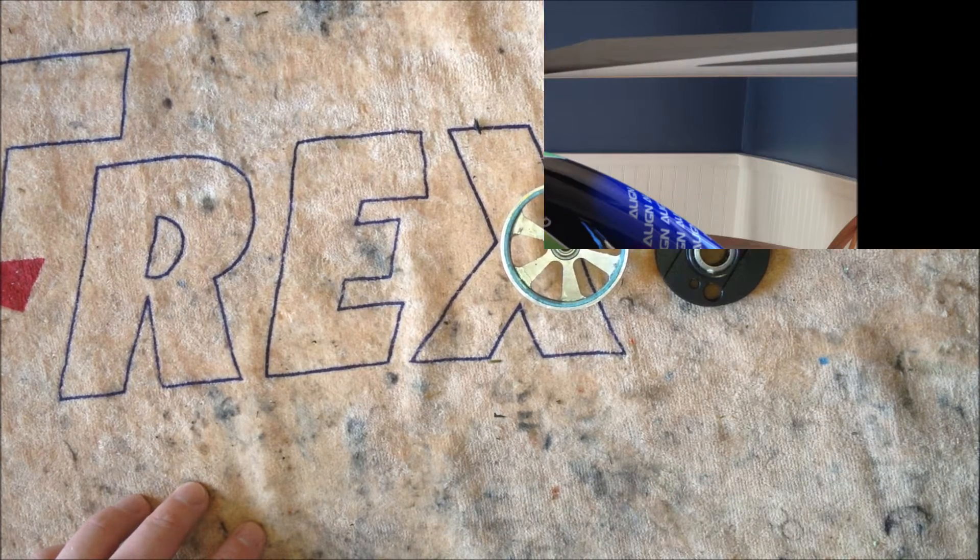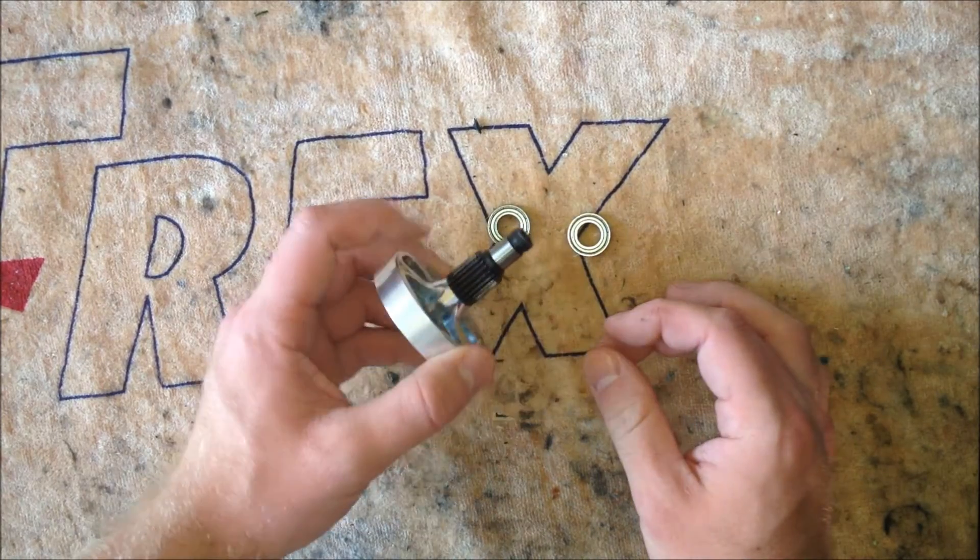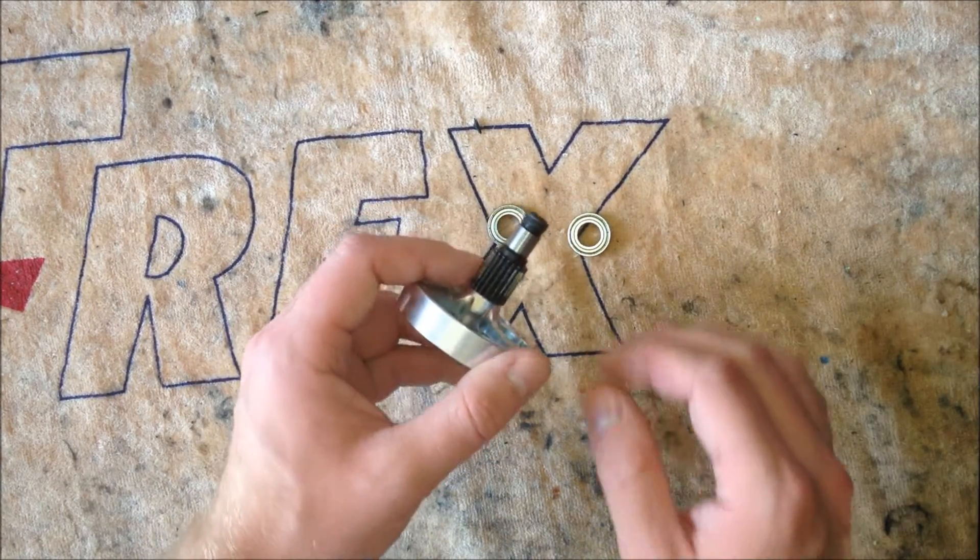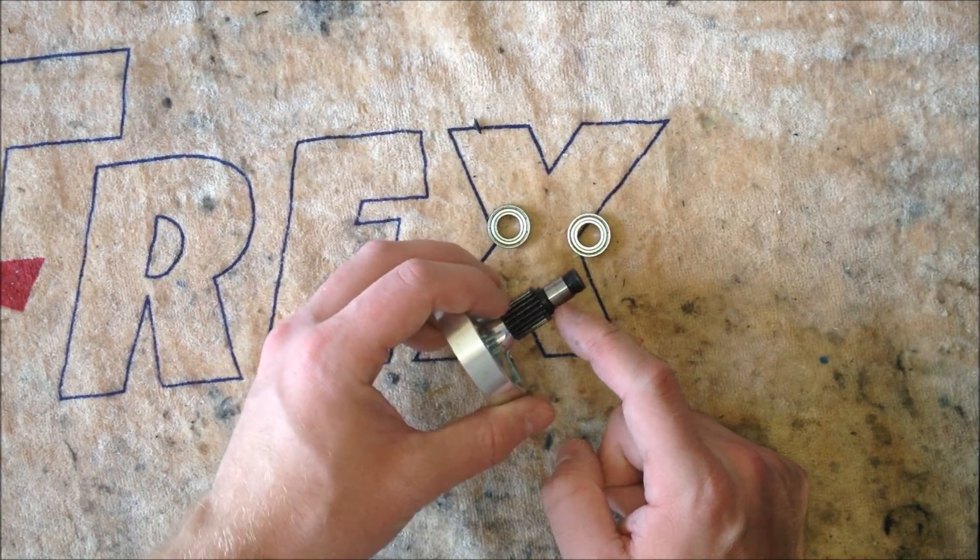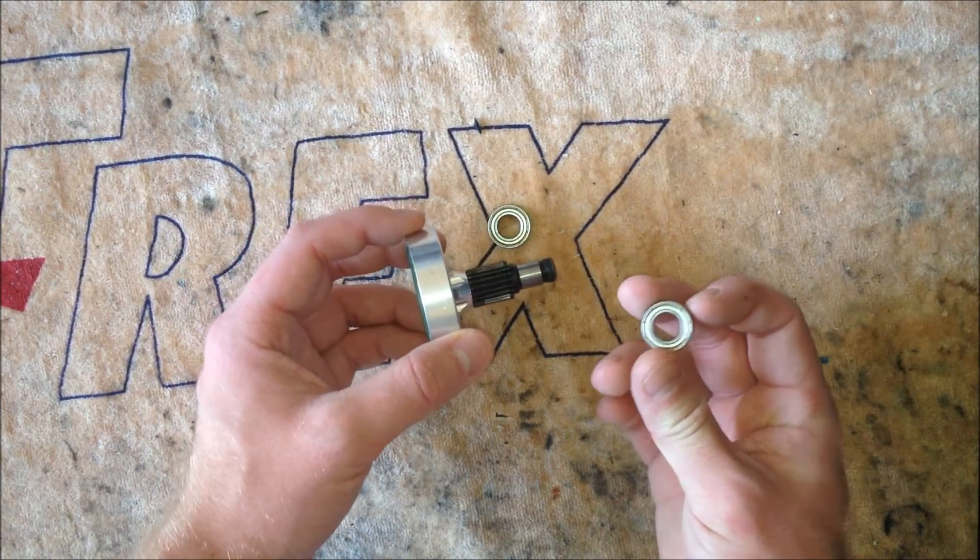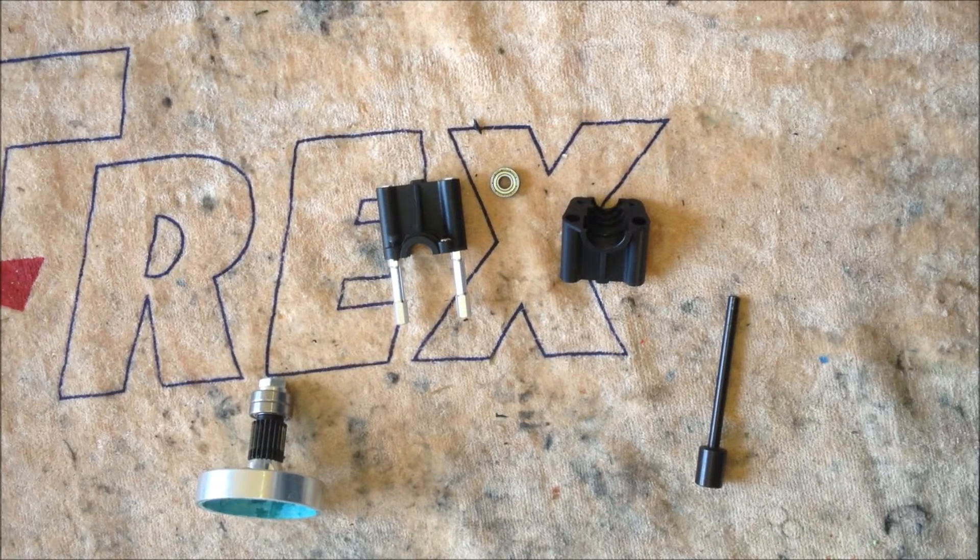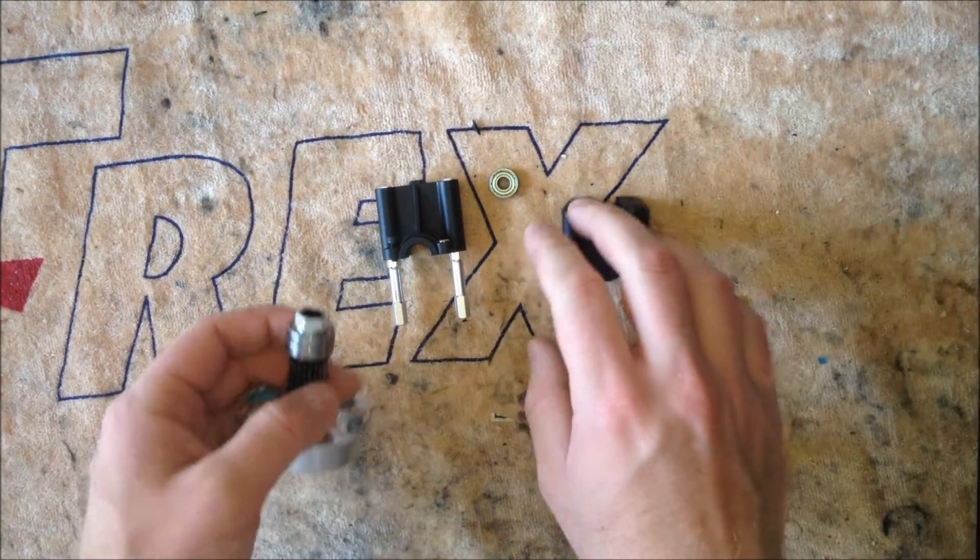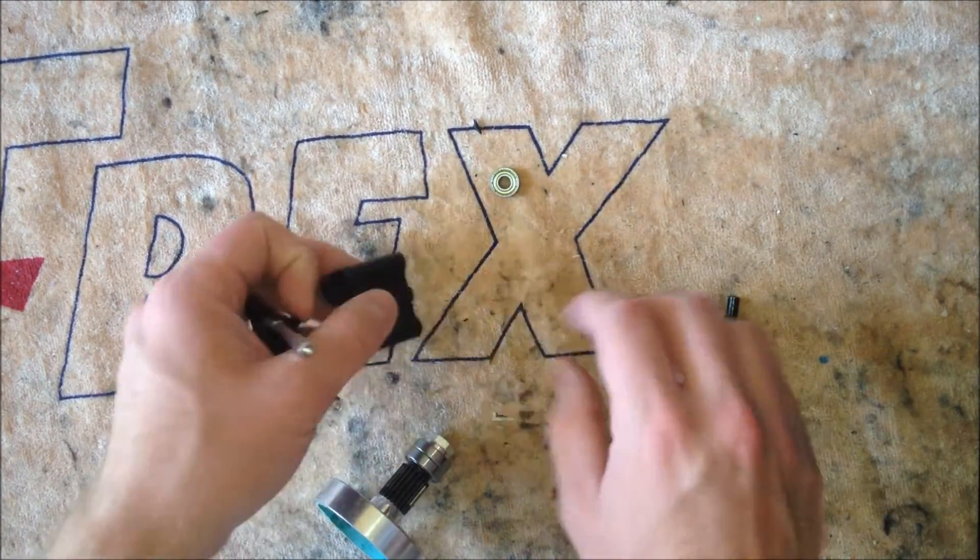The first thing we're going to go over today is some of the parts that we're going to use during this video. I have here an Align 700 clutch bell with the liner installed. I have a clutch, the starter coupling, our starter shaft, the castle nut, our clutch bell housing, our bearings for the clutch stack up, and we also have the pinion over here. We're going to go over some of the tips and tricks with each of these components starting right here with the clutch bell.